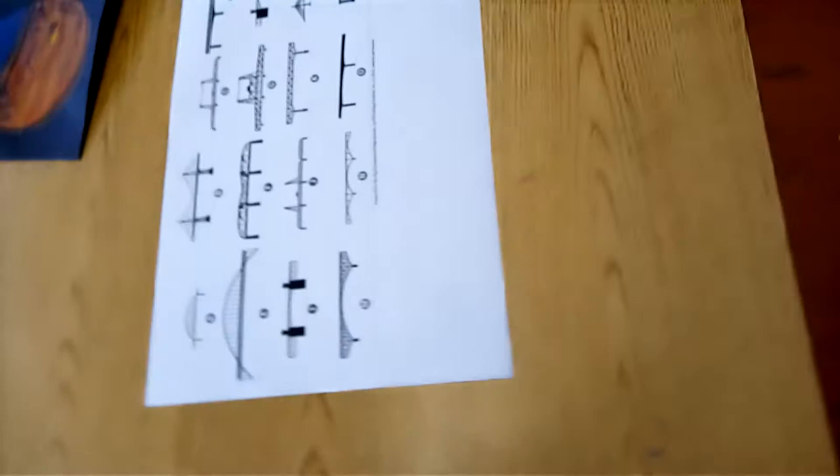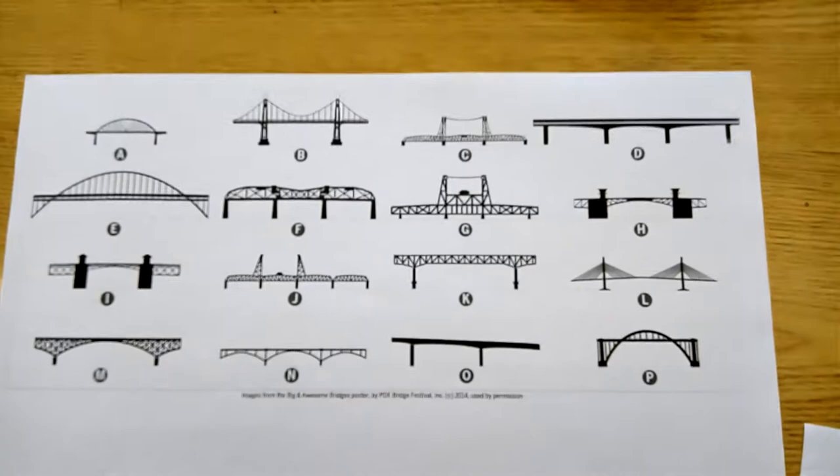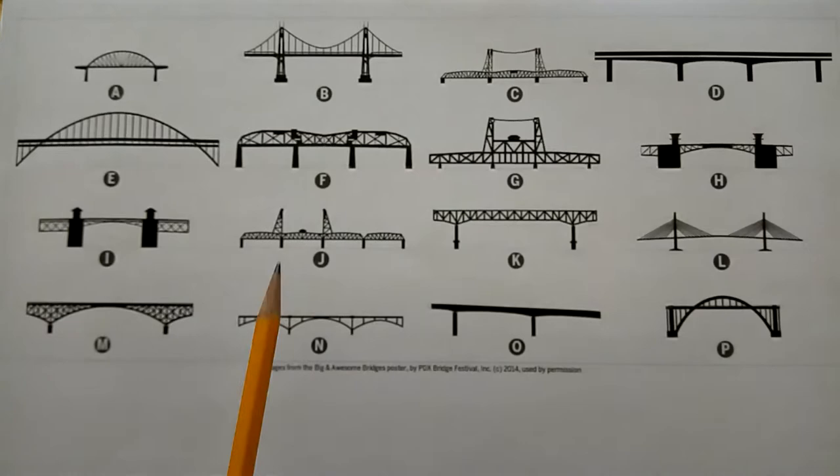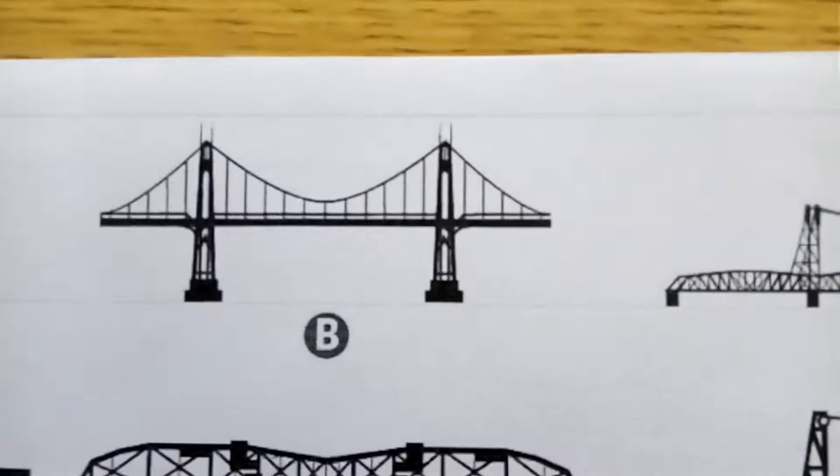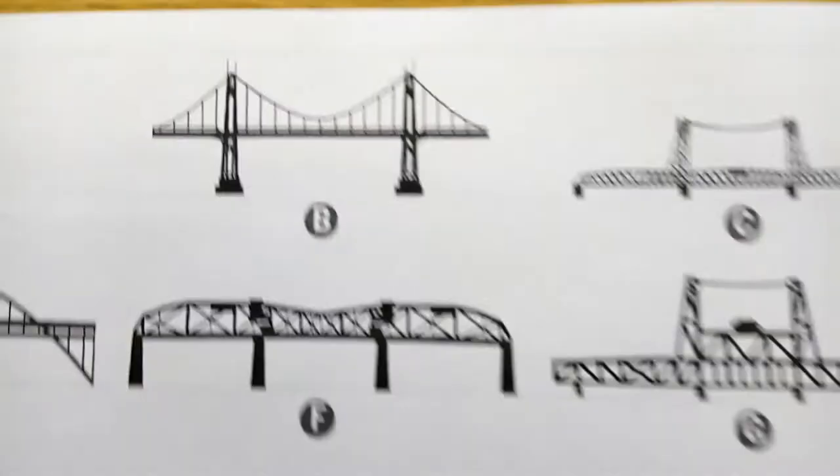We're going to be designing based on bridges of Portland here, so you can look at all the different bridges we have. Lots of options. Look at all these different designs, they're all very different. I think that one up there is the St. John's Bridge. You can see those towers there, pretty recognizable. Let's give that one a try.